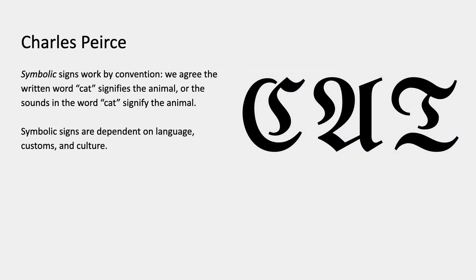The second kind of sign, according to Peirce, are symbolic signs. These work by convention — we agree that the written word 'cat' in English signifies that animal, or the sounds of the word 'cat' signify the animal. Symbolic signs are dependent on language, customs, and culture; they don't resemble what they denote.